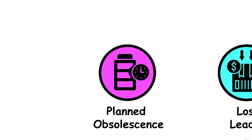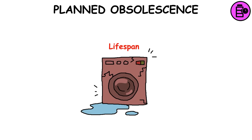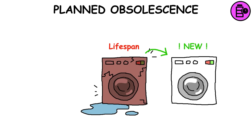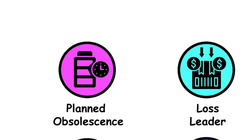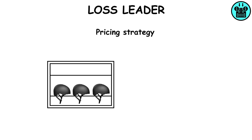Planned obsolescence: Designing products with limited lifespans to boost repeat purchases and sales volume. Loss leader: A pricing strategy where a product is sold below cost to boost sales of more profitable items.